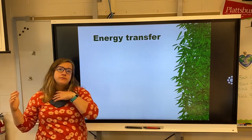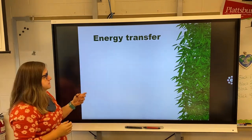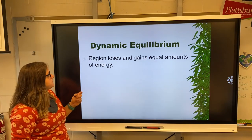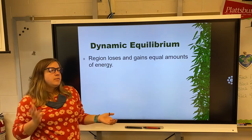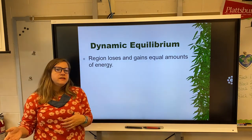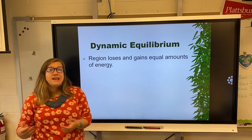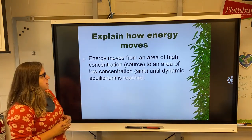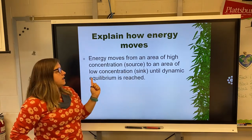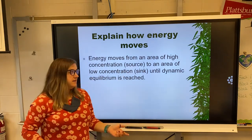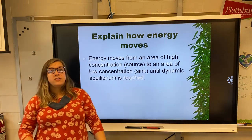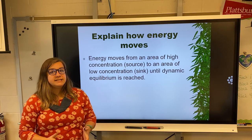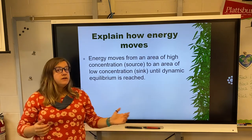Energy transfer — when energy goes from one thing to the next, how does it get transferred? Earth always wants to get into dynamic equilibrium: when one area loses something, something else is going to gain it. Energy moves from an area of high concentration, known as the source, to an area of low concentration, known as the sink, until dynamic equilibrium is reached. Energy flows from high to low — from a source to a sink.